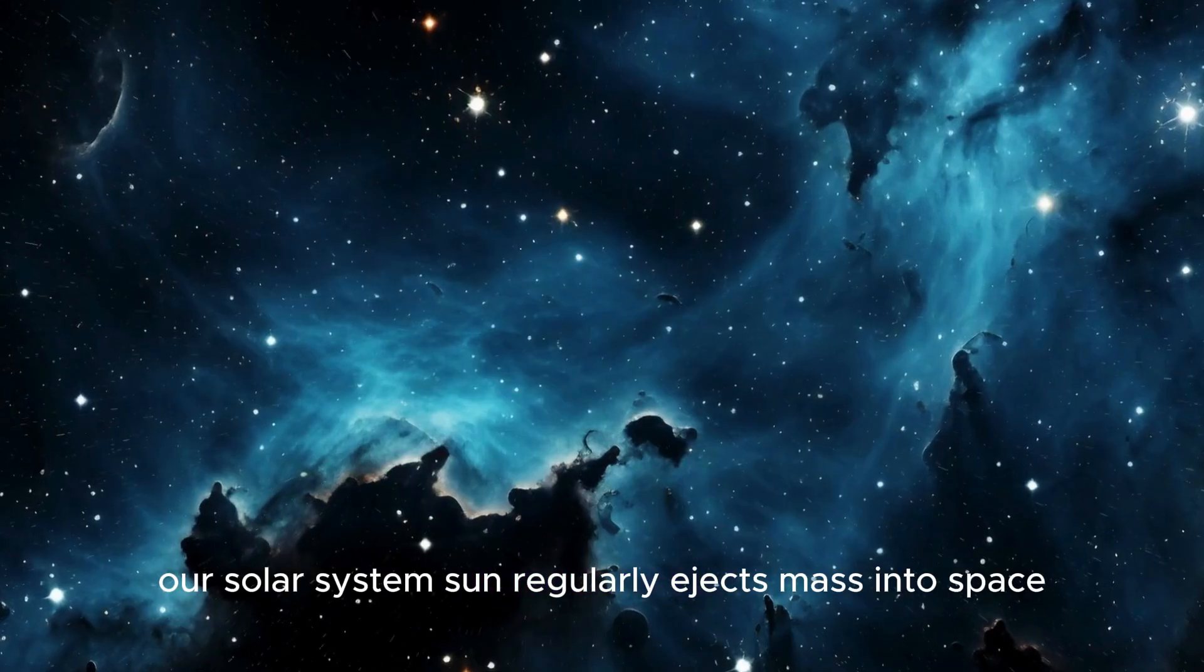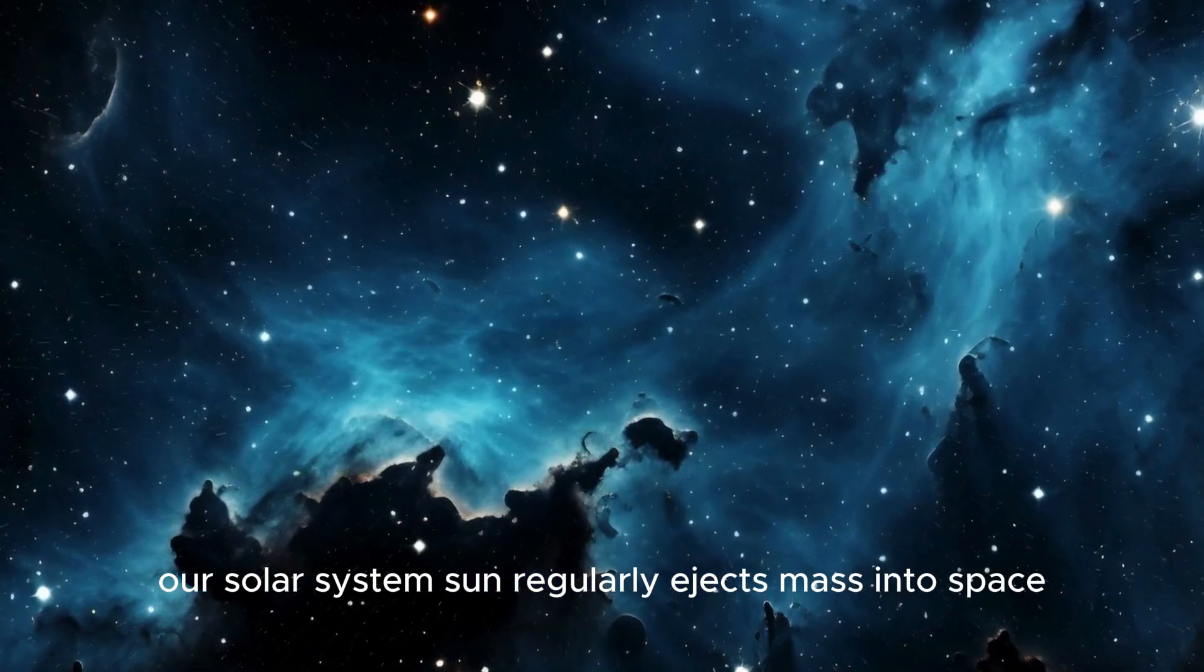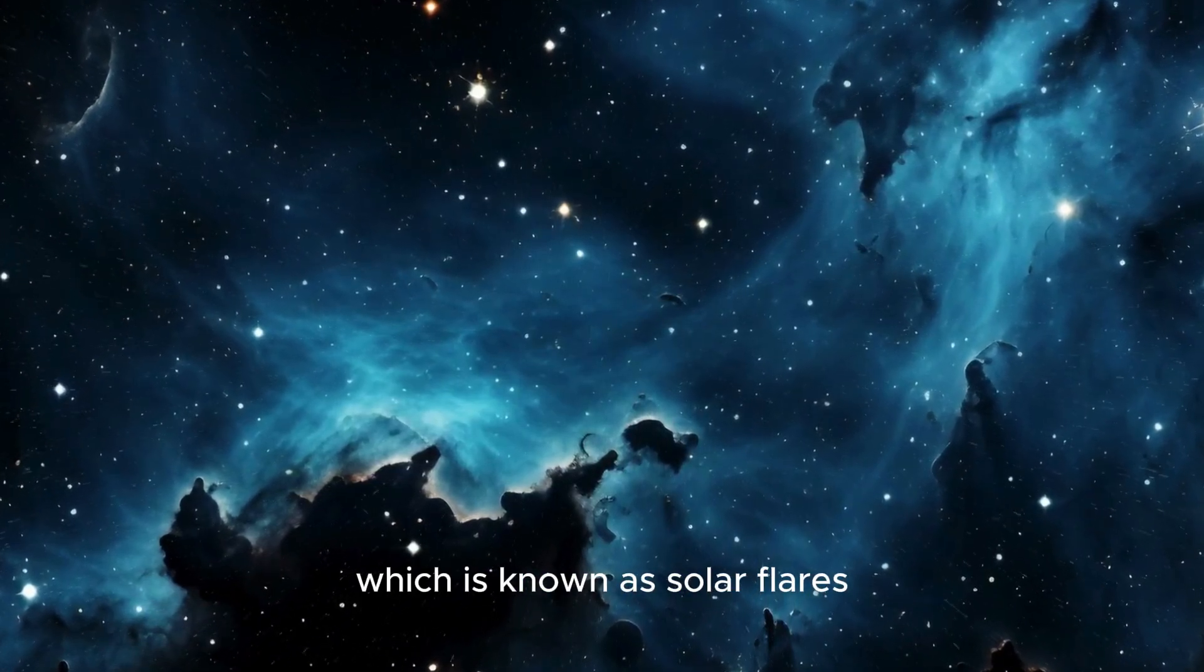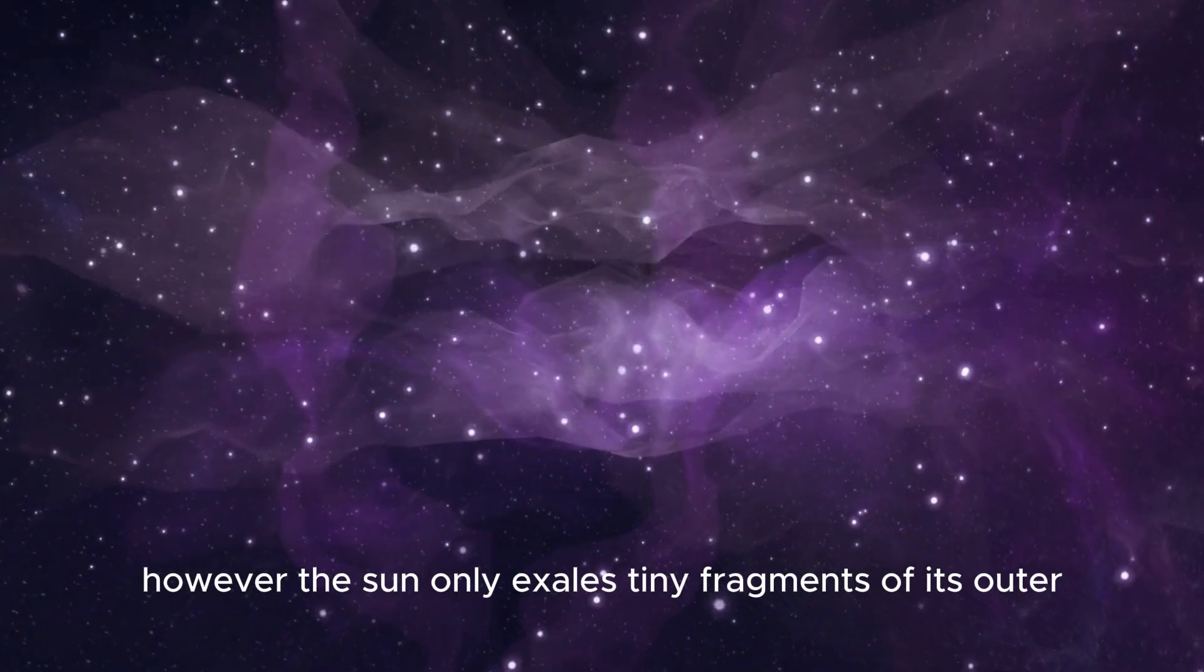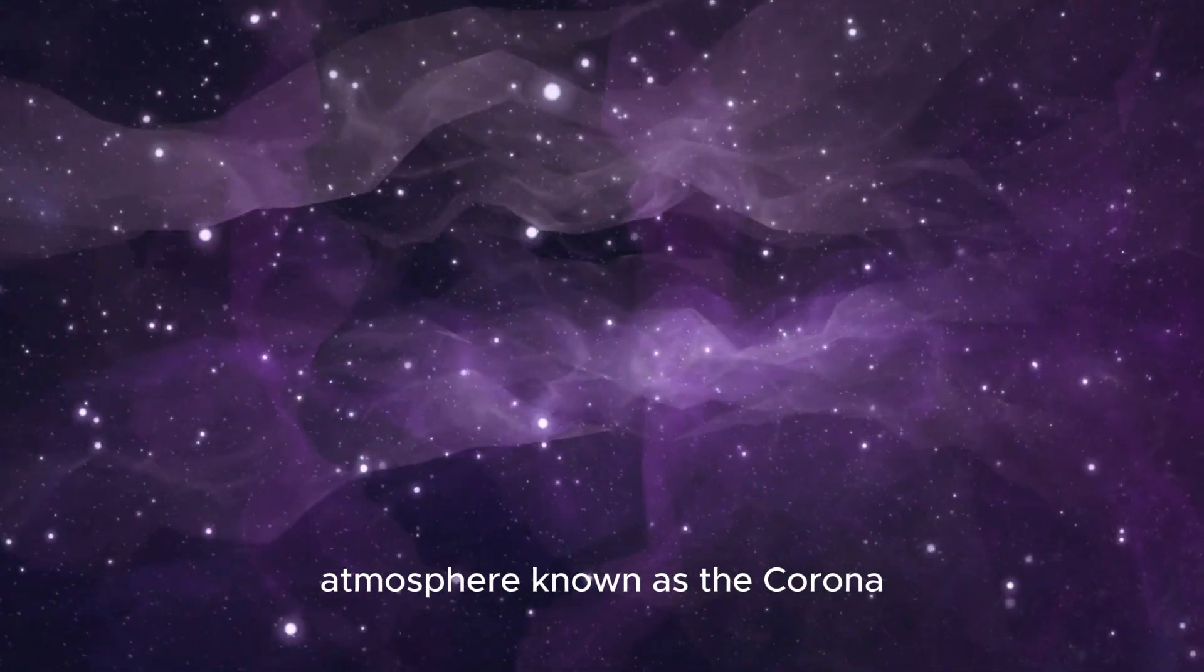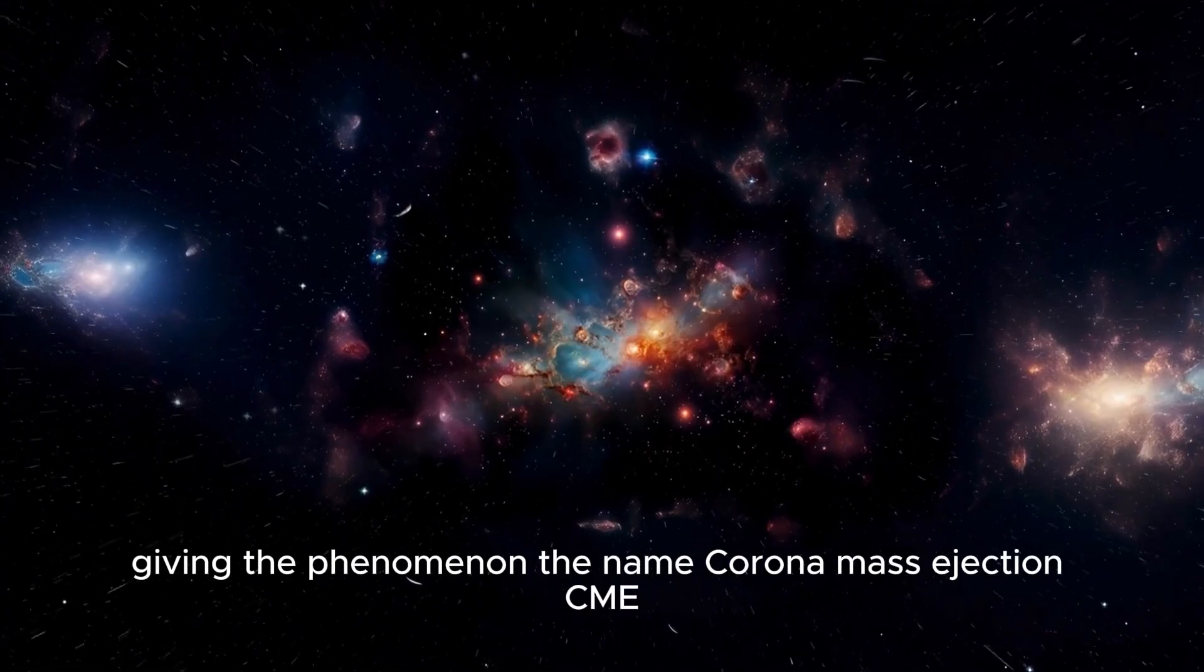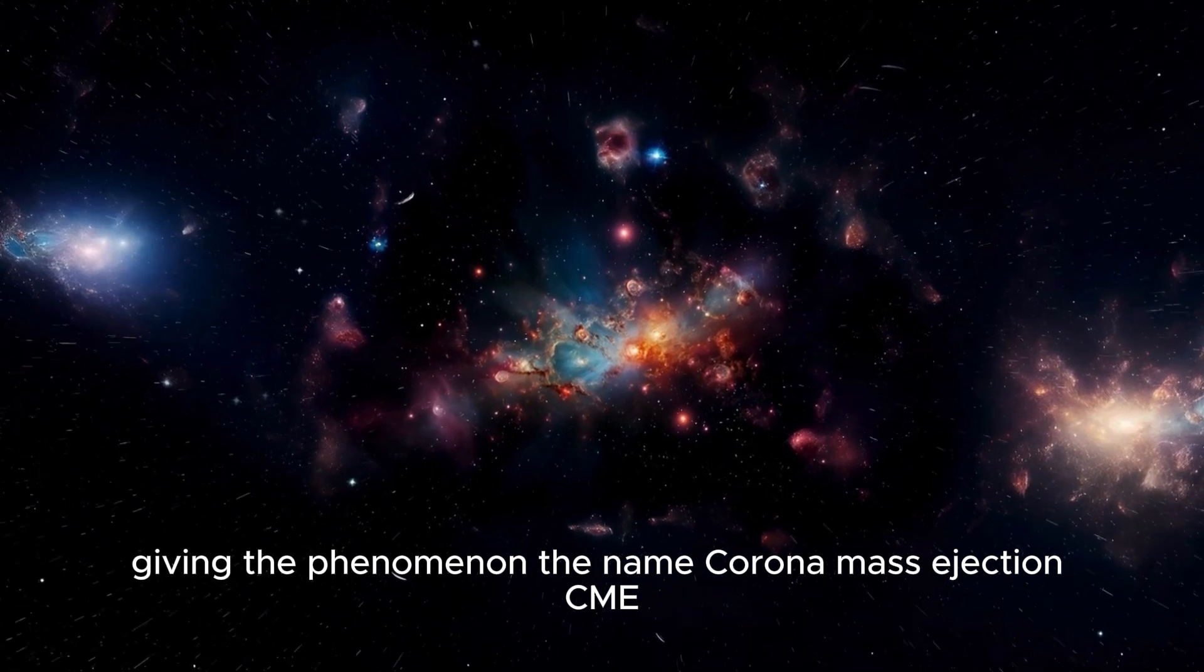Our solar system's Sun regularly ejects mass into space, which is known as solar flares. However, the Sun only exhales tiny fragments of its outer atmosphere known as the corona, giving the phenomenon the name coronal mass ejection, or CME.